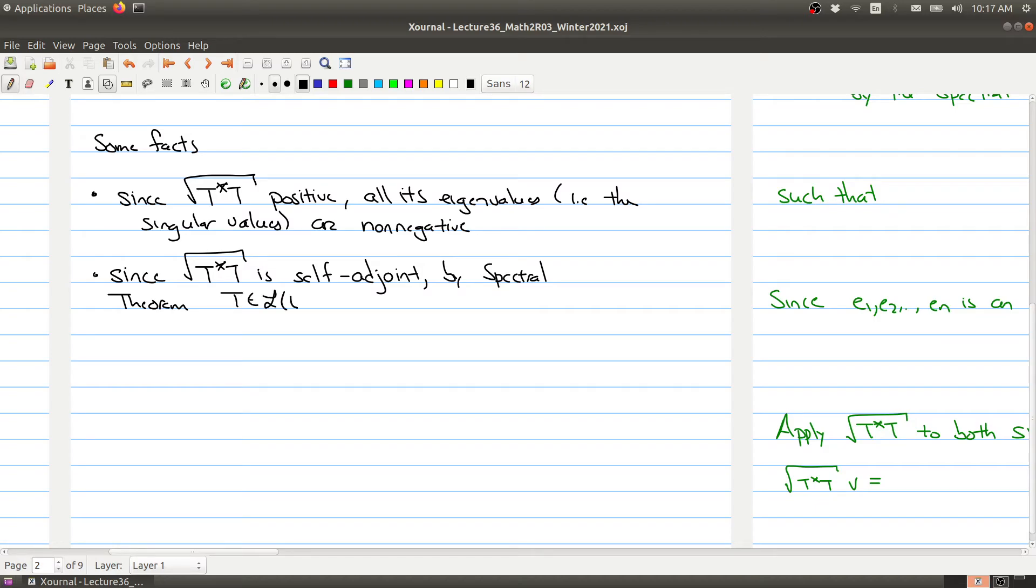And we know by the spectral theorem that you can actually diagonalize this. T with L, V has dimension V singular values. So normally when you have an operator, you're not sure if you have enough eigenvalues kicking around. But when you make this operator, you do have enough eigenvalues kicking around, assuming that you counted with multiplicity.